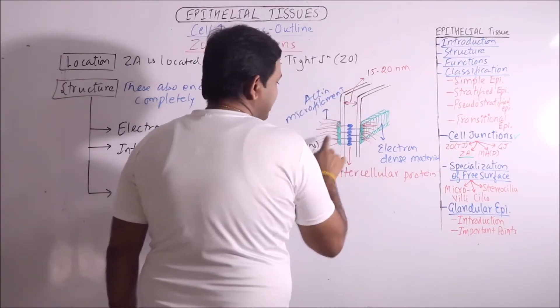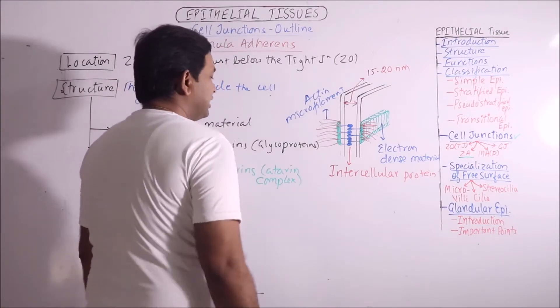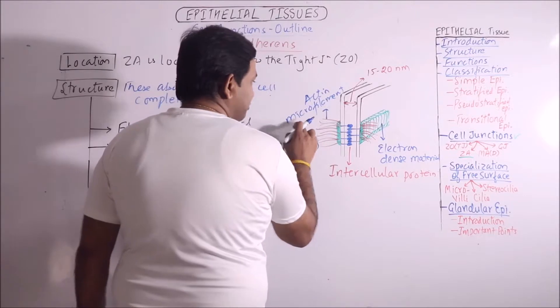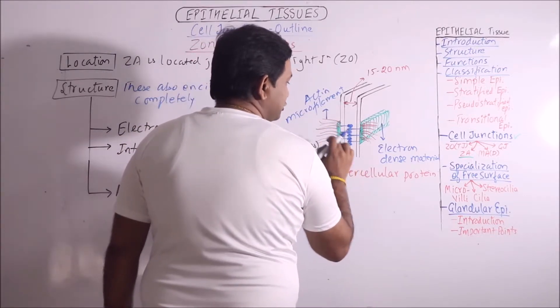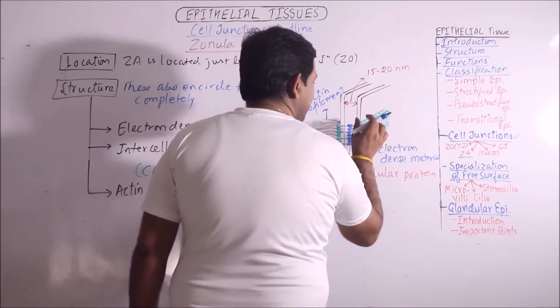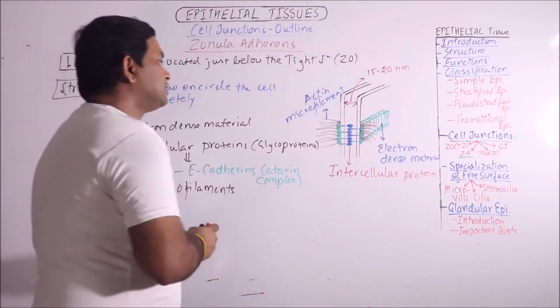On one end these are embedded in the electron dense material. While on the another end these are attached with the fibers of terminal web. So, terminal web, actin microfilament, then electron dense material, then intercellular protein, then again the electron dense material, then actin microfilaments, and then the terminal web of cell 2.